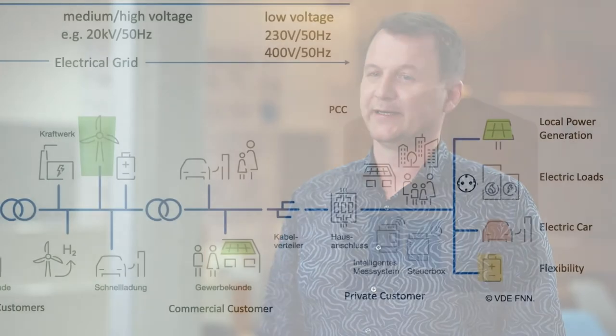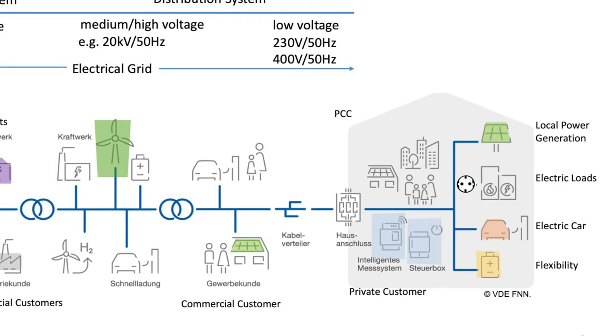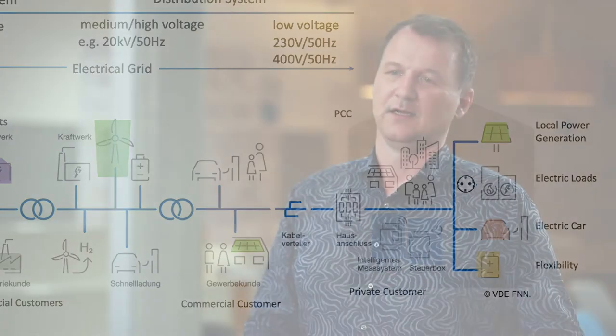20 kilovolts is about 50 times the 400 volts of our low voltage system, so assuming the same currents in the medium voltage system we can transfer 50 times the power. Higher voltage allows higher power to be transferred and larger loads to be connected, as shown here: fast charging stations, larger batteries, wind turbines, smaller power plants, hydrogen production sites — all those systems can be connected to the medium voltage side, along with many low voltage feeders like our house.